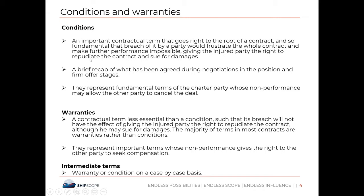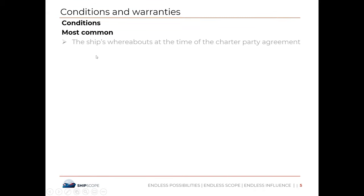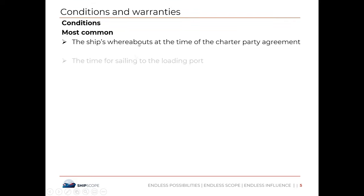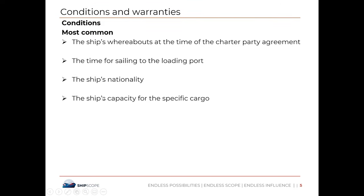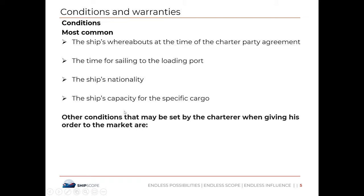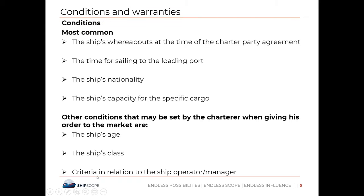The most common conditions are: the ship's whereabouts at the time of the charter party agreement, the time for sailing to the load port, the ship's nationality, the ship's capacity for the specific cargo, the ship's age, and other conditions set by the charterer when giving its order to the market. If any breach happens in these conditions, the charterer has the right to cancel the whole fixture.